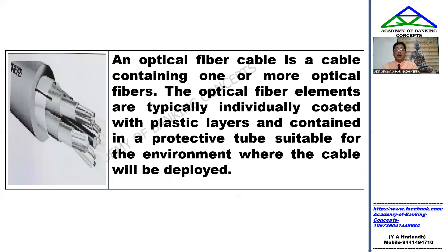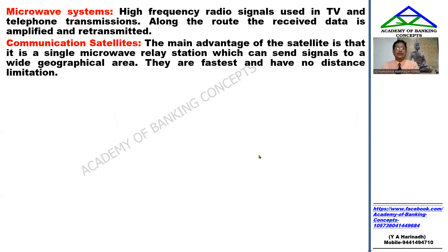Optical fiber cable contains one or more optical fibers. The optical fiber elements are individually coated with plastic layers and contained in protective tubes suitable for the environment where the cable will be deployed. Next, we come to the microwave system. It is used in communication sectors and consists of high-speed radio waves.